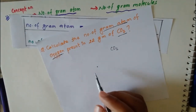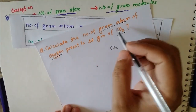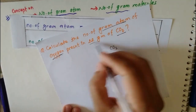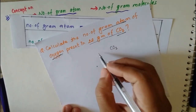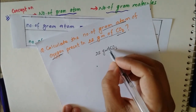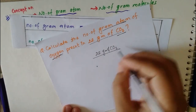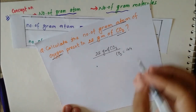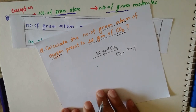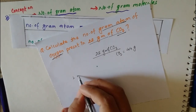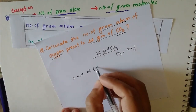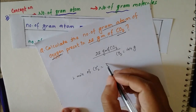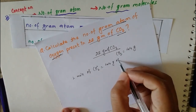Now let us solve the numerical: calculate the number of gram atoms of oxygen present in 22 grams of CO2. We are given 22 grams of CO2. First of all, find the molecular weight of CO2 — molecular weight of CO2 is 44 grams. So 1 mole of CO2 has a mass of 44 grams.